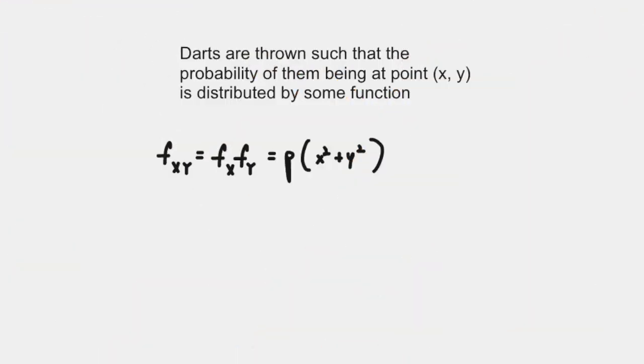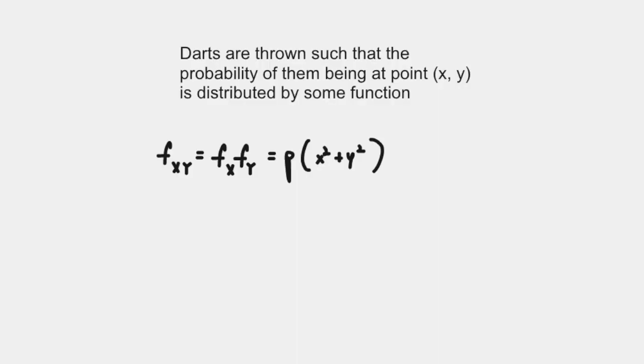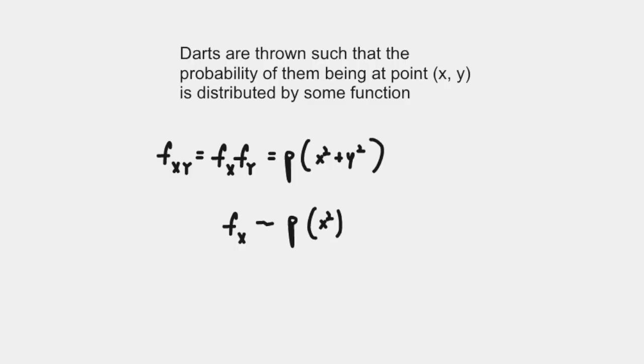Because x and y are identically distributed and independent, we can split up this joint distribution function into the product of a distribution function of x and a distribution function of y. We can isolate the variables by setting one of them equal to zero. If we set y equal to zero, we see that our probability density function for x is proportional to our function p at x². If we do the same thing for y, we have that the product of p(x²) and p(y²) is proportional to our original function p(x² + y²). What we have now is a functional equation.